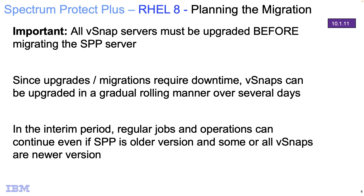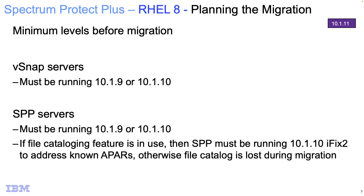From a planning and support perspective — and this is very important — we do recommend that you upgrade all of the vSnap servers to 10.1.11 first, and then, as the final step only, upgrade the Spectrum Protect Plus server. In our traditional manner, we're supporting two versions back, so you should be running 10.1.9 or 10.1.10 on your SPP servers and vSnap servers. My recommendation would be to go to 10.1.10 iFix2 on these appliances — that should be a relatively easy upgrade and is a good place to start with the latest available pre-10.1.11.